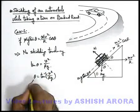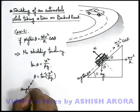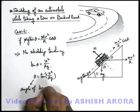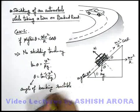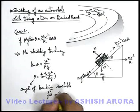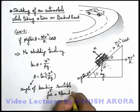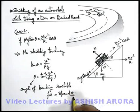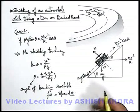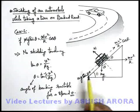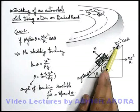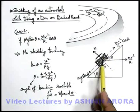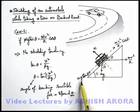So this is the angle of banking, suitable for a speed v with which if the automobile is taking a turn it will not have any tendency of skidding. Now let's discuss what will happen if mg sinθ is more than mv²/r cosθ when speed is decreased, or when automobile speed is increased such that mv²/r cosθ becomes more than mg sinθ.